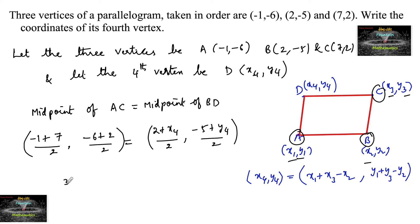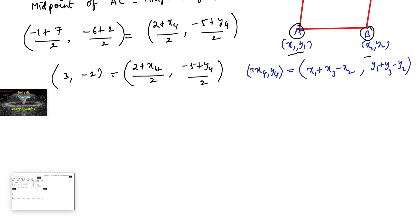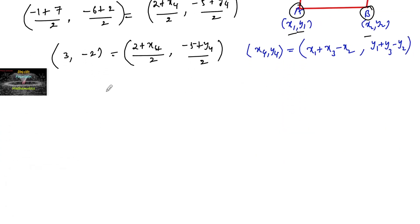This simplifies to (3, -2) = ((2+x₄)/2, (-5+y₄)/2). Therefore, (2+x₄)/2 = 3 and (-5+y₄)/2 = -2.